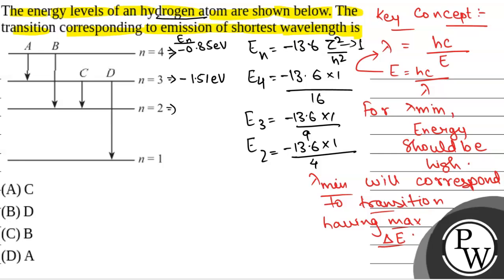E₂ equals -3.4 electron volts. For n equals 1, E₁ equals -13.6 × 1/1, which is -13.6 electron volts.